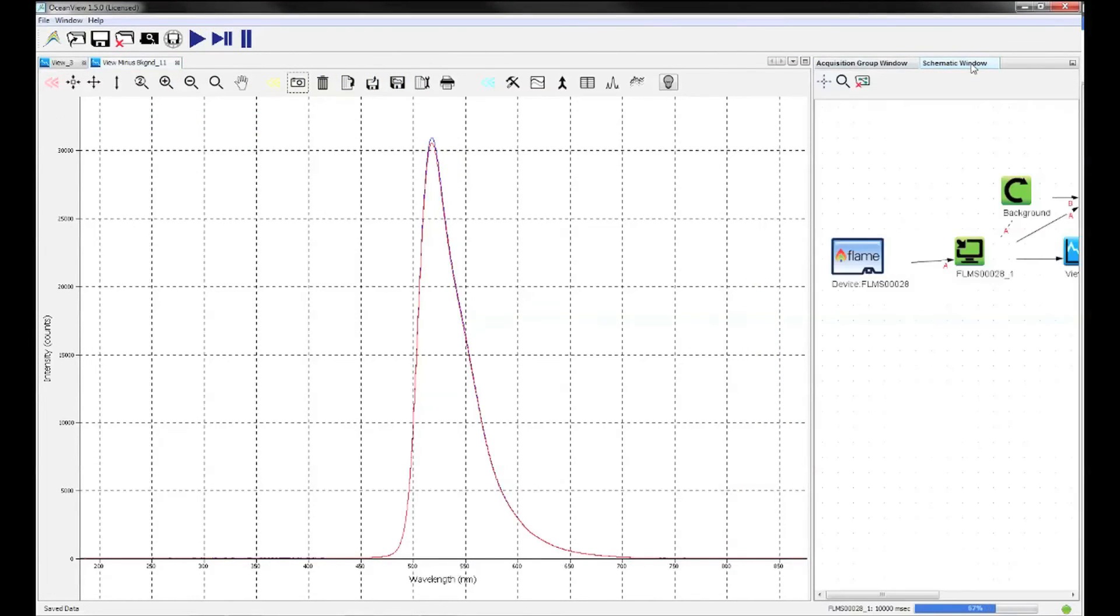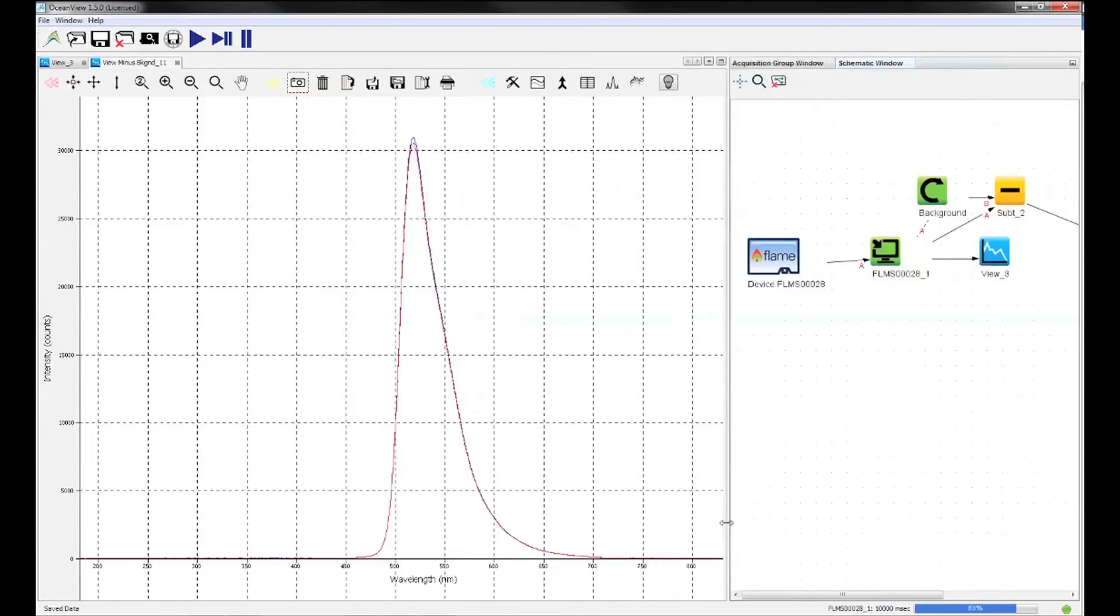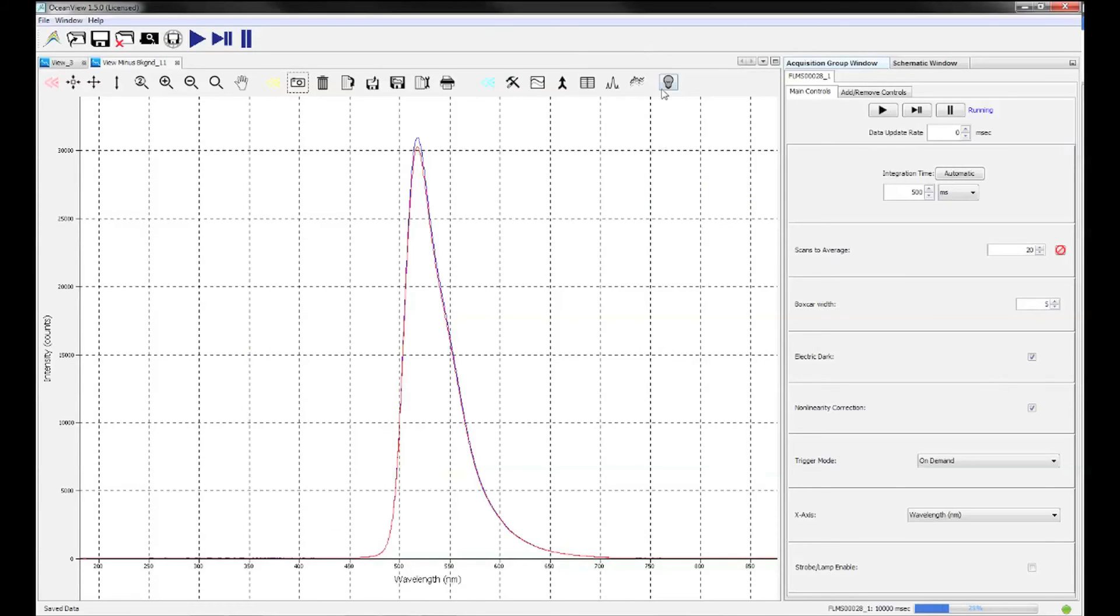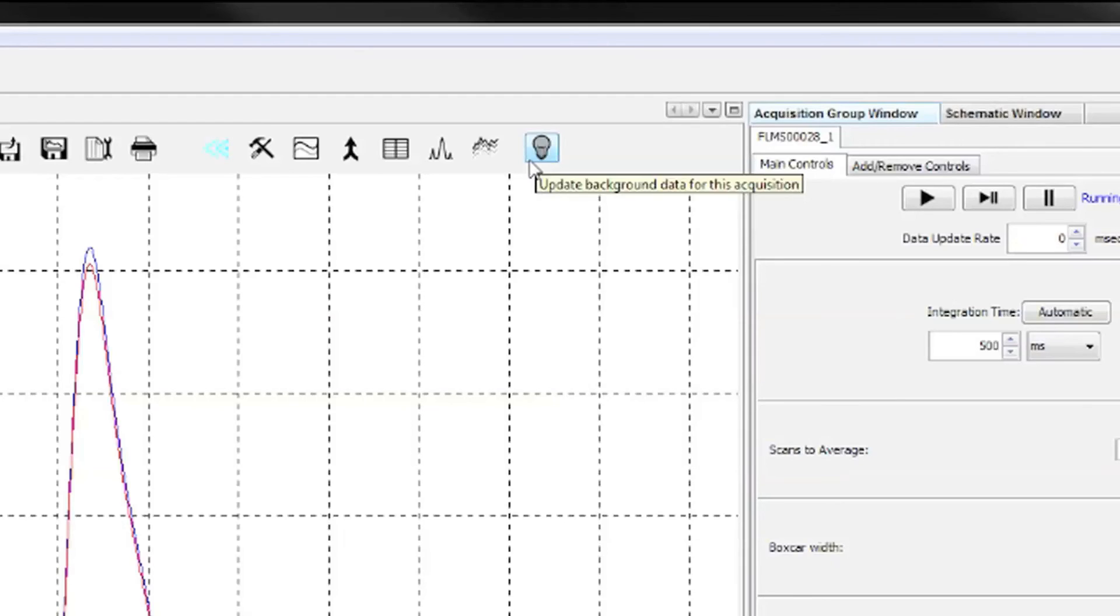You can also look at the schematic window to see the functions that are being performed for your fluorescence measurement. If you want to change the acquisition parameters, make sure you take a new dark using the bulb icon at the top of the screen.